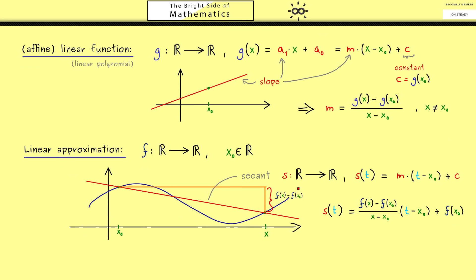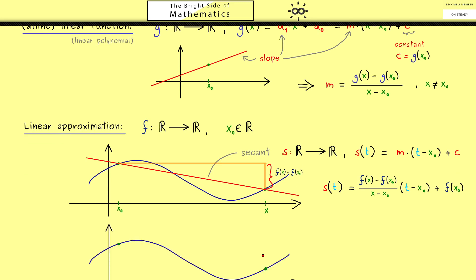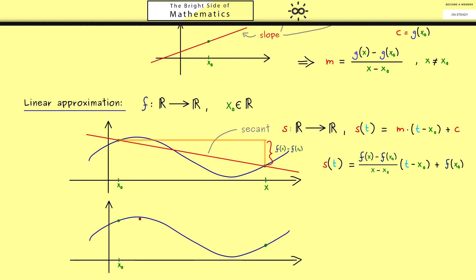Hence our only requirement for this linear approximation is that this limit exists. And in this case we can call this number the slope of the function at the point x₀. Then also in this case we can introduce a nice new symbol. We use the notation f′ for this limit if it exists.